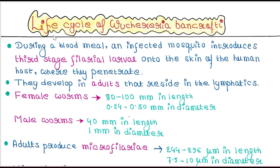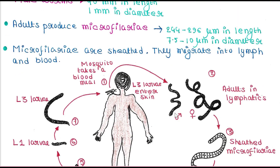During a blood meal, an infected mosquito introduces third-stage filarial larvae onto the skin of the human host where they penetrate. The mosquito must carry the Wuchereria larvae, and the larvae should be the third-stage larvae. The mosquito bites the human and introduces L3, or third-stage larvae, into the skin, and the larvae penetrate the skin.